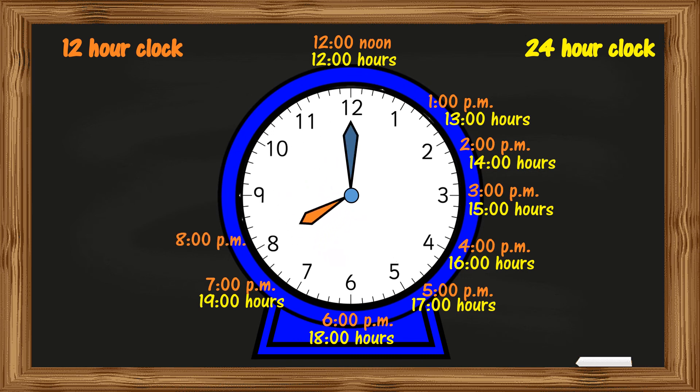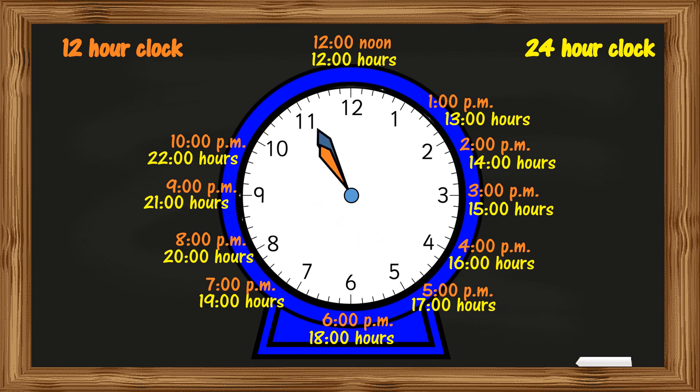8pm is 1900 hours. 9pm is 2100 hours. 10pm is 2200 hours. 11pm is 2300 hours. And 12 midnight will be 2400 hours.